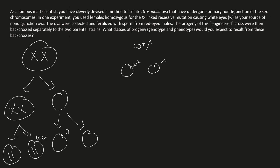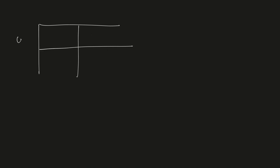The progeny of this engineered cross were then backcrossed separately to two parental strains. The question asks: what class of progeny — genotype and phenotype — would you expect from these backcrosses? To solve this problem, you first cross the primary non-disjunction ova with a red-eyed male, then backcross to the parents. Let's set up a Punnett square. In primary non-disjunction, one gamete possibility gives two X chromosomes at once, and the other gives neither.